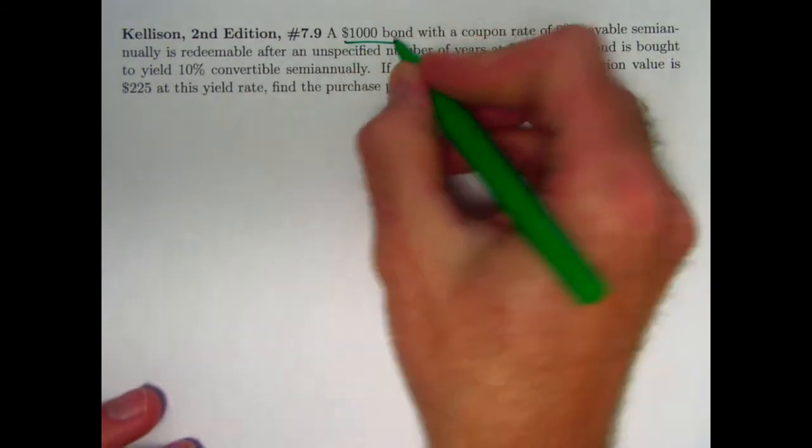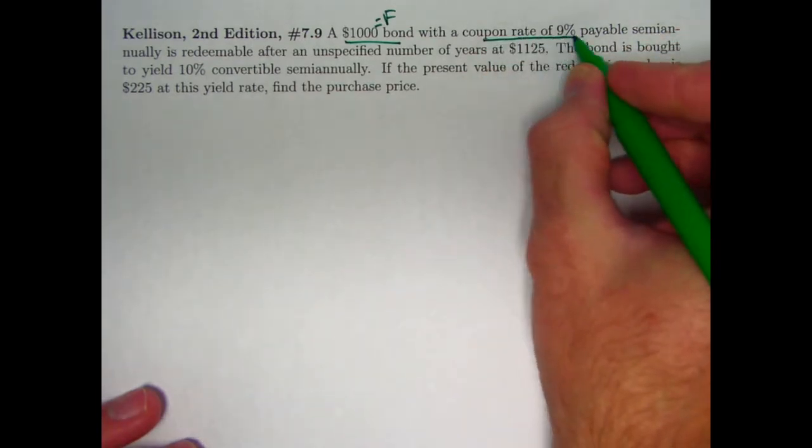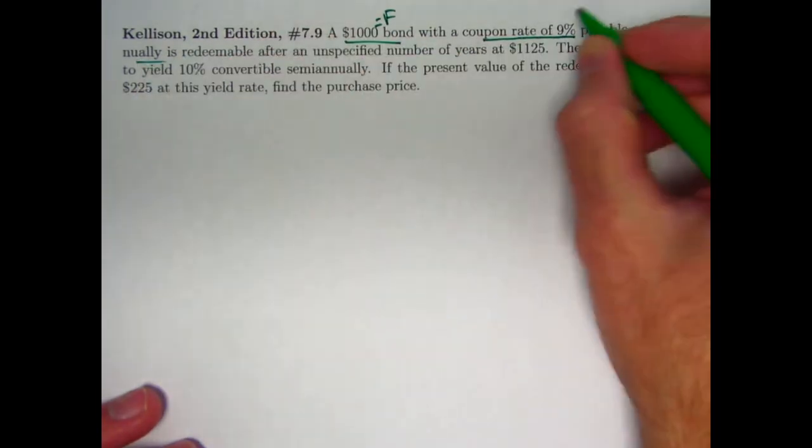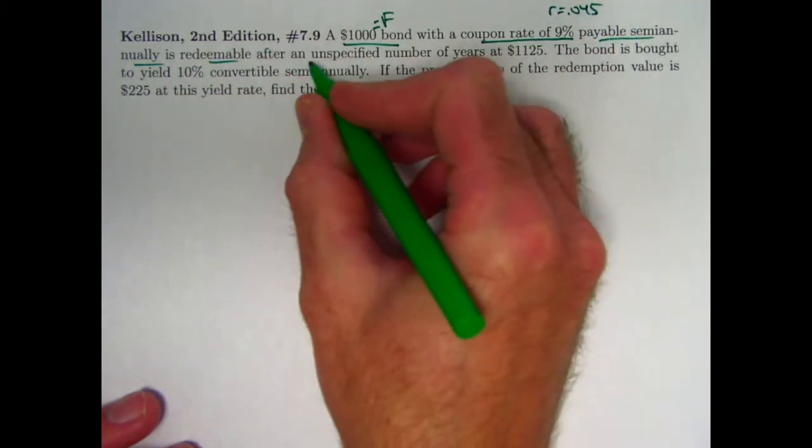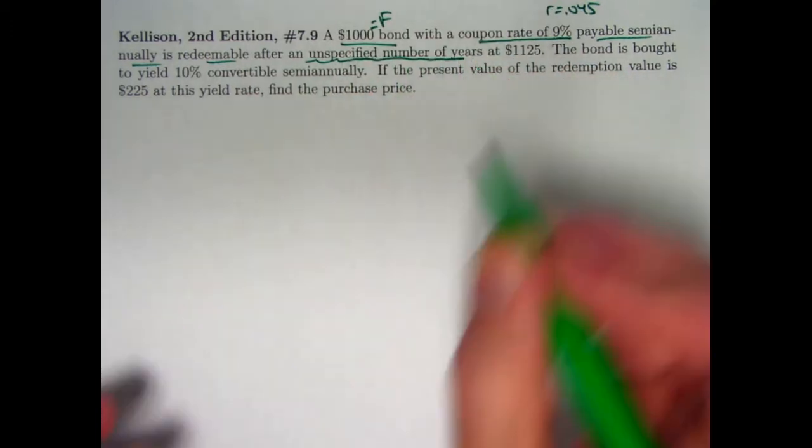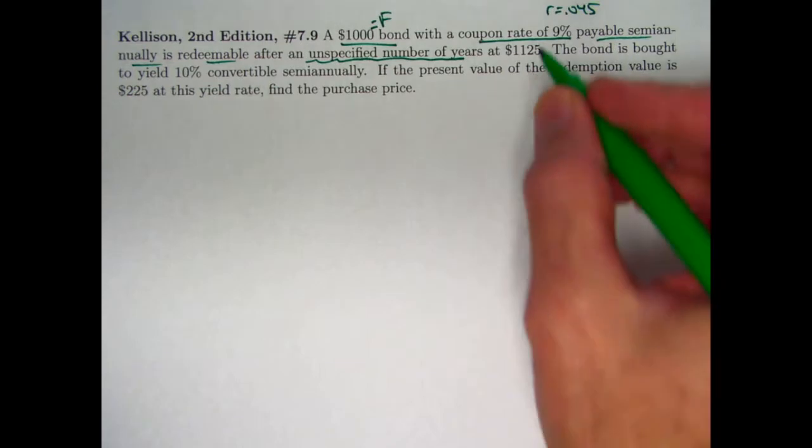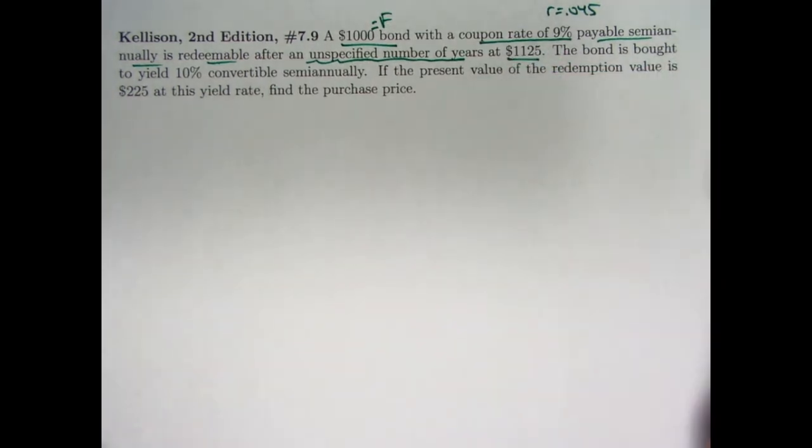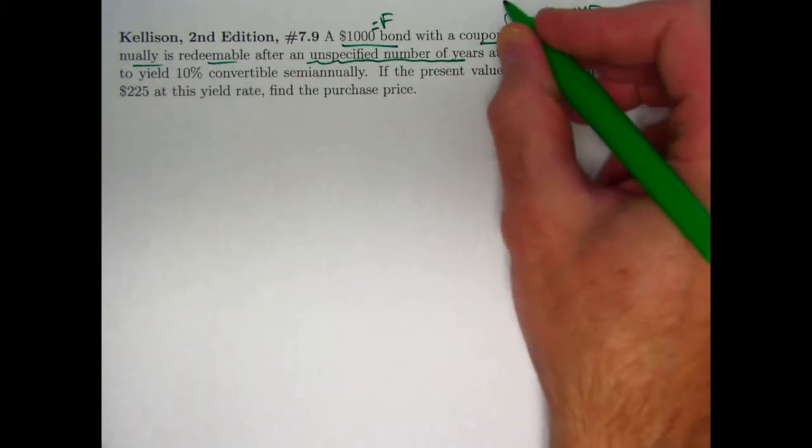Here is the problem. We've got a $1,000 bond. This is the face or par value of the bond. It's got a coupon rate of 9% payable semi-annually, so R is going to be 0.045. It's redeemable after an unspecified number of years. So N here, the number of coupon payments, is going to be unknown. Though the redemption value is known, $1,125. That is going to be the value of C.